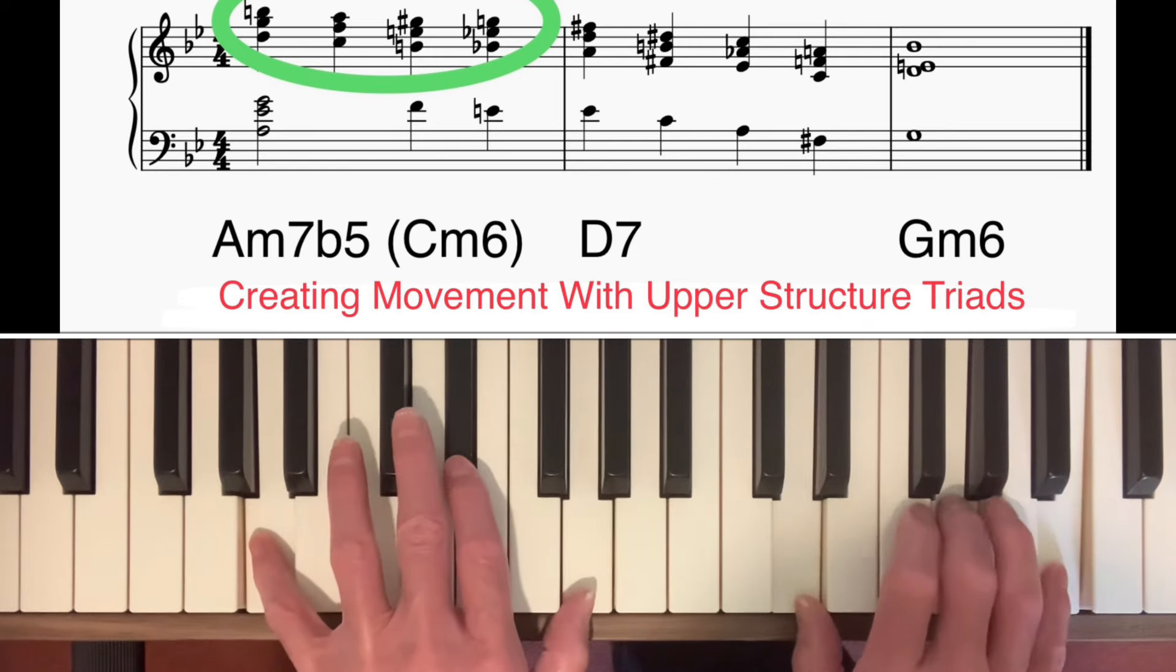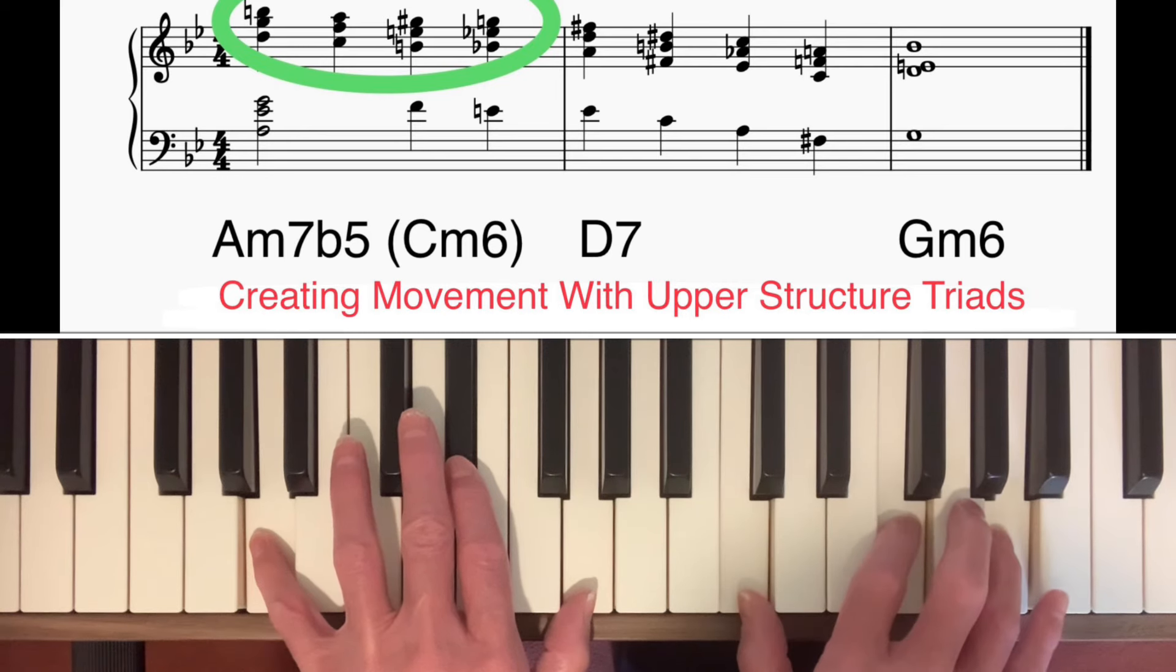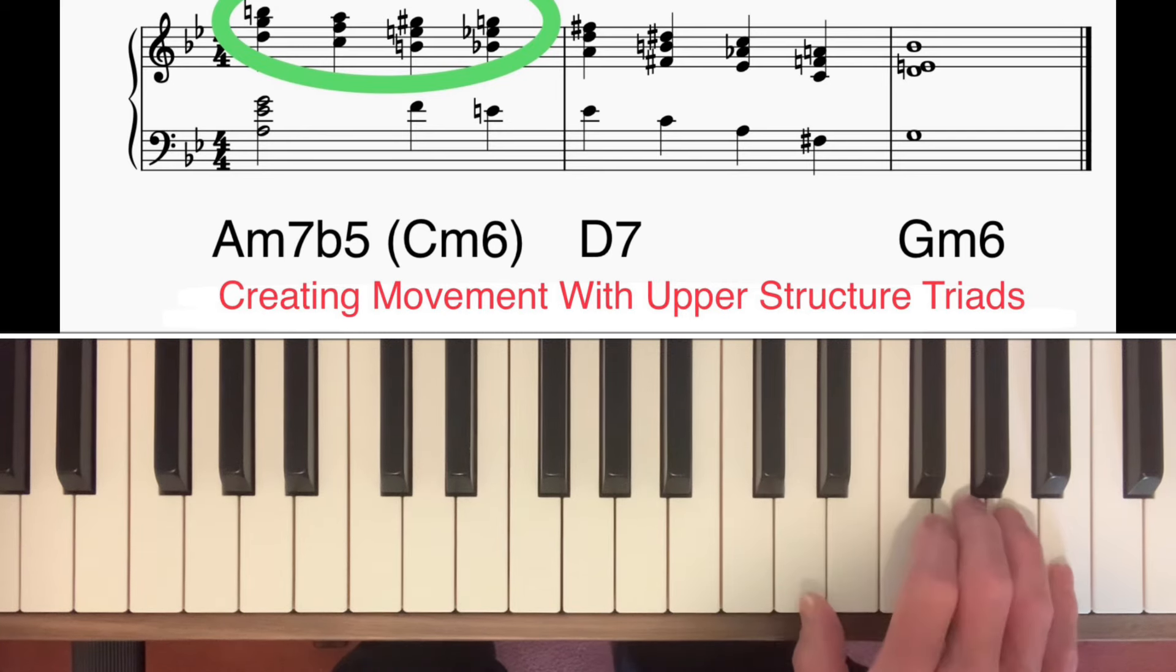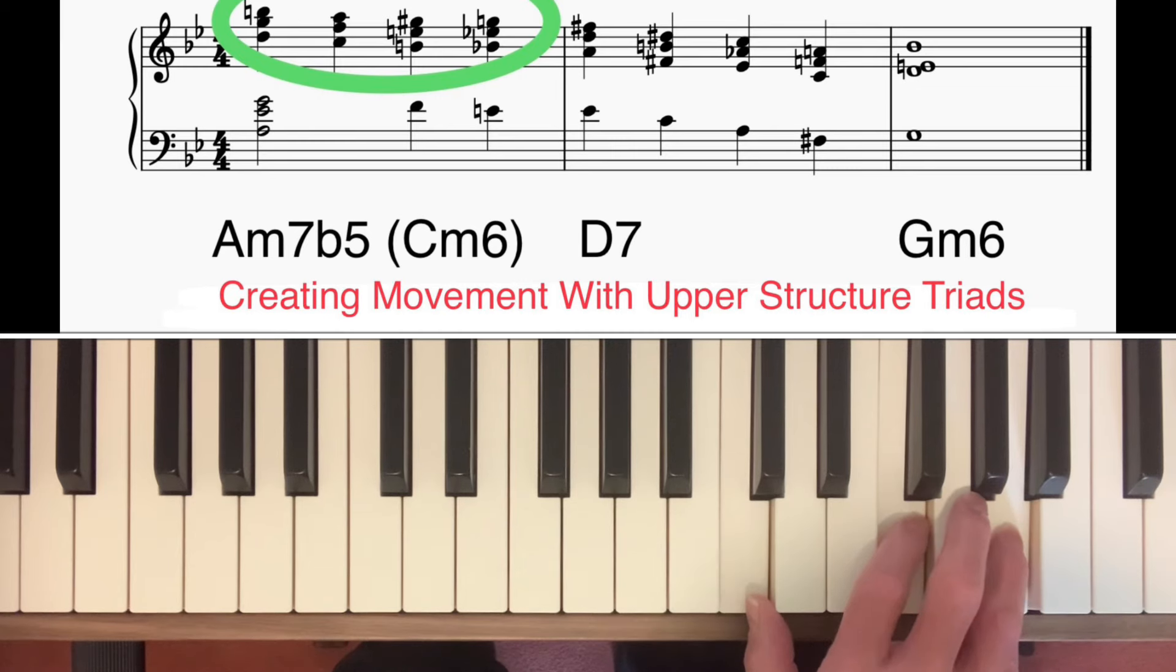Now, I then went to this voicing. So, if I look at the right hand now, that's an F major chord in second inversion. So, I've got two major triads just moving by step, both in second inversion.